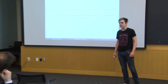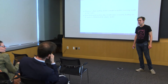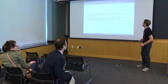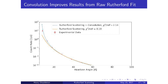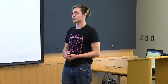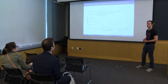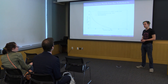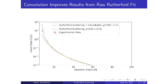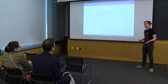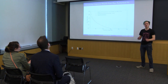In response to whether we tried fitting without the triangular angular response correction: yes, we did. The convolution does benefit our data — it does a noticeably better job at describing the data than the pure Rutherford one-over-sine-to-the-fourth fit alone. The difference is a chi-squared of about 8.18 for the raw Rutherford fit compared to 2.14 with the convolution.